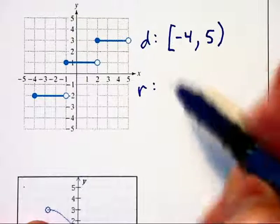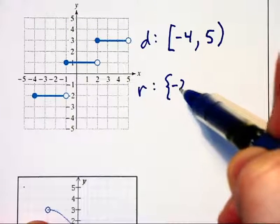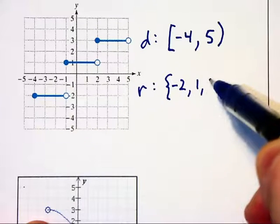The range, however, is not an interval. Instead, it's just going to consist of the three y values: negative 2, 1, and 3.